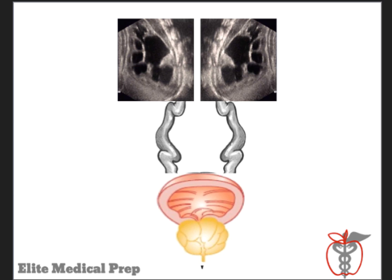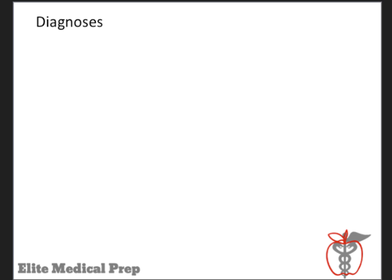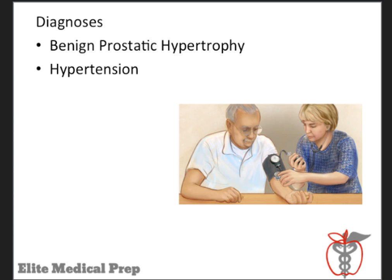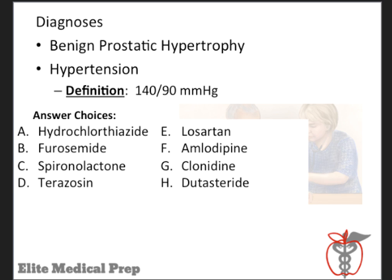This also leads to signs of renal insufficiency, the most common of which is a high creatinine — we are always looking out for creatinine clinically. So, we recognize that our patient has BPH. That's the diagnosis. But as stated at the beginning, we also need to treat his high blood pressure. Hypertension is a silent killer with numerous negative effects throughout the body. The definition of hypertension is 140 over 90 or greater. We have numerous treatment options for his hypertension, some of which have desirable and undesirable effects. We need the treatment option that will also address BPH.